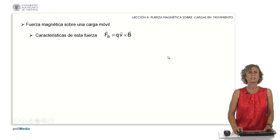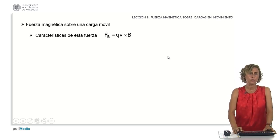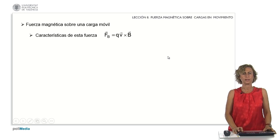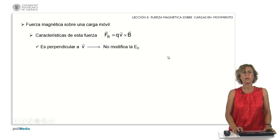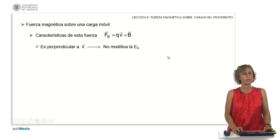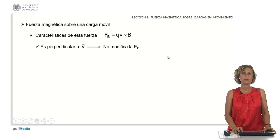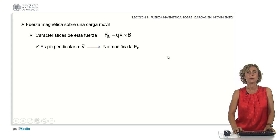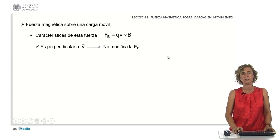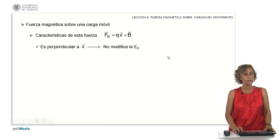Let's explore the characteristics of the magnetic force acting on a moving charge. Firstly, the magnetic force must be perpendicular to v. When it aligns perpendicularly, it is also perpendicular to the displacement. As work is defined as force times displacement, work becomes zero. Remember, work is also equivalent to the change in kinetic energy. Hence, if work is zero, the change in kinetic energy is also zero.